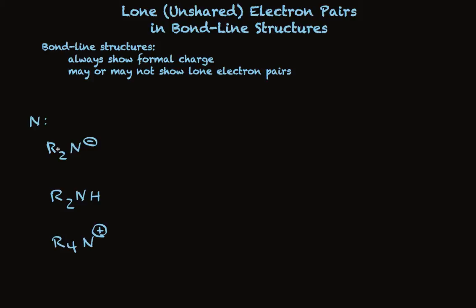Nitrogen is sigma bonded to two carbons, as is shown here, represented by alkyl groups. So there's two pairs of electrons represented by what I've written here. It needs to have four pairs of electrons to have eight in the outer shell. So there's two more pairs.